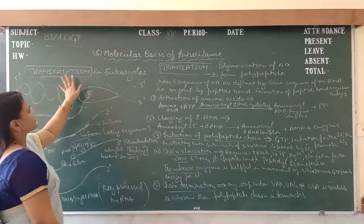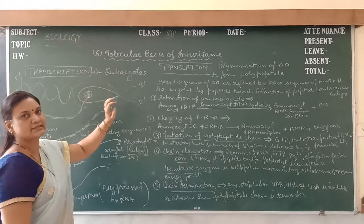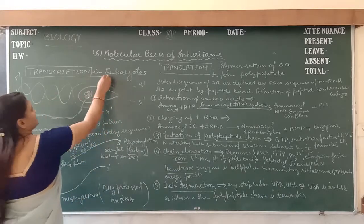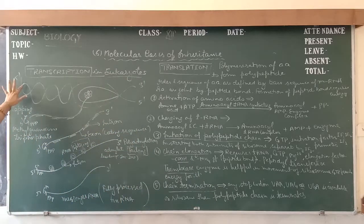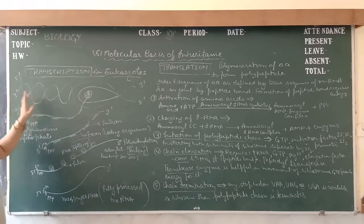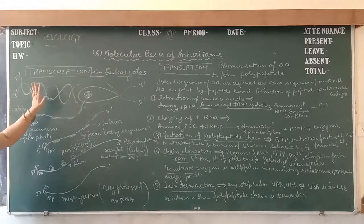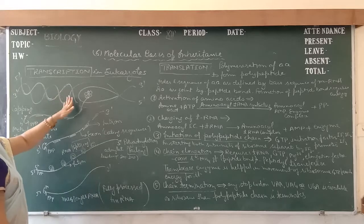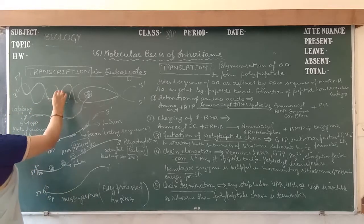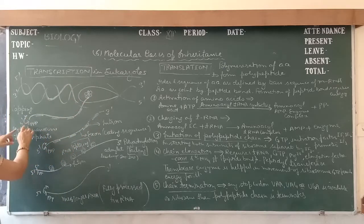We have already discussed the transcription process in prokaryotes. In prokaryotes, transcription is divided into three phases. In eukaryotes, you can see there are two strands of DNA: 5'-3' and 3'-5'. Only the 3'-5' strand acts as a template for messenger RNA synthesis. The transcription is the process of synthesis of messenger RNA from DNA. In this process, the formation of messenger RNA occurs in the direction of 5' to 3'.